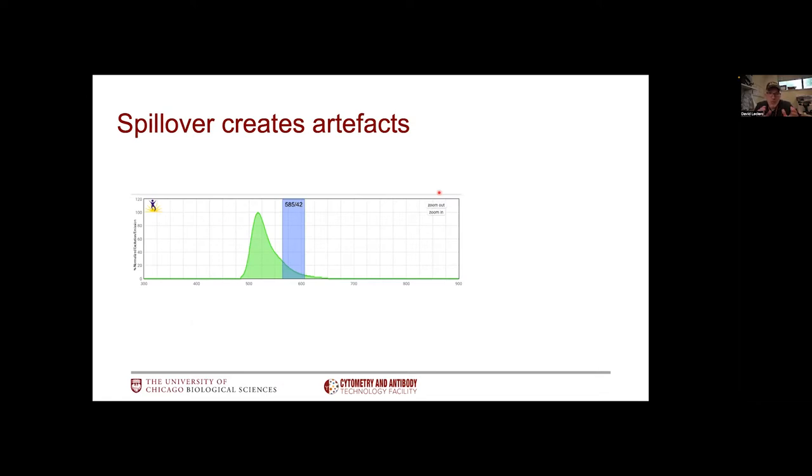To discuss spillover, we're going to focus on this example of FITC bleeding in my PE channel with the 585-42 bandpass filter. If I was to run a sample of cells stained with only FITC, this is the type of data I would expect on the instrument. X-axis is my FITC signal, PE is on the Y-axis.